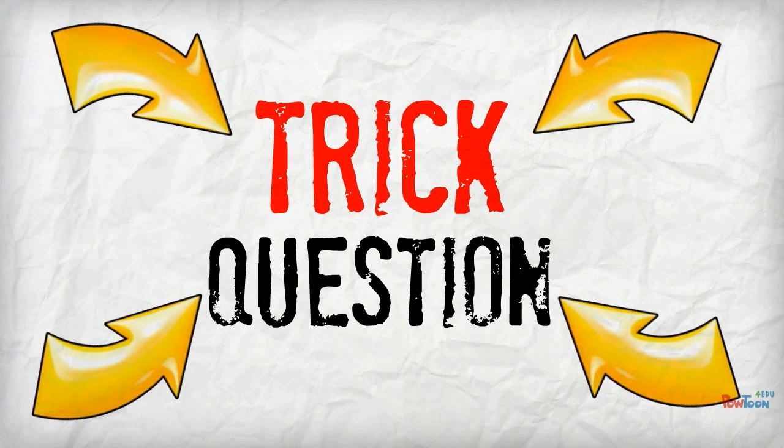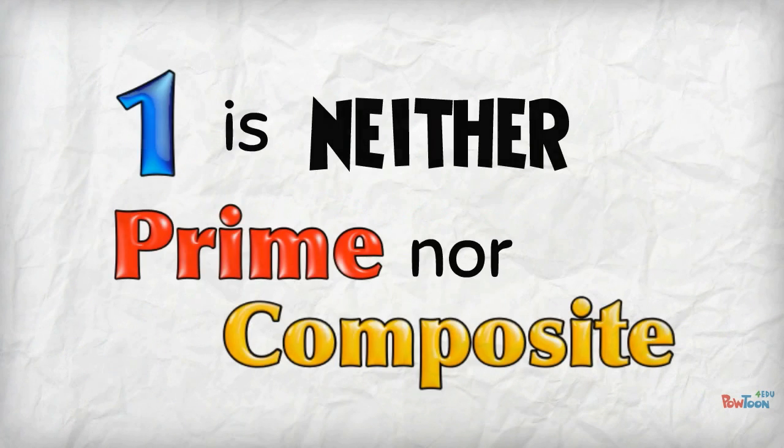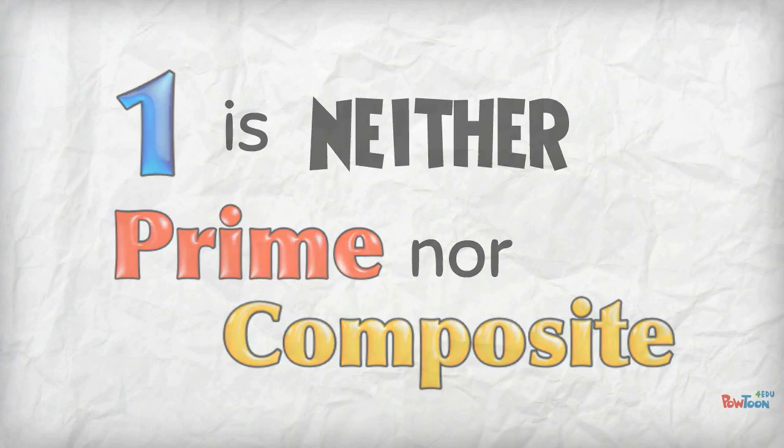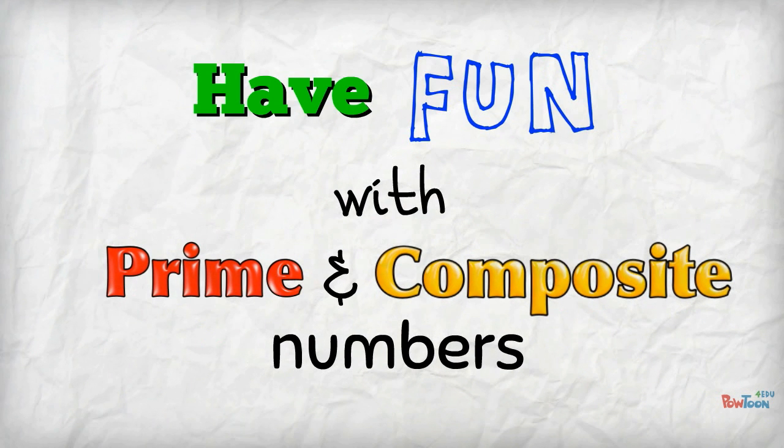You know it's a trick question! 1 is neither prime nor composite. And now you can explain exactly why. Have fun with prime and composite numbers!